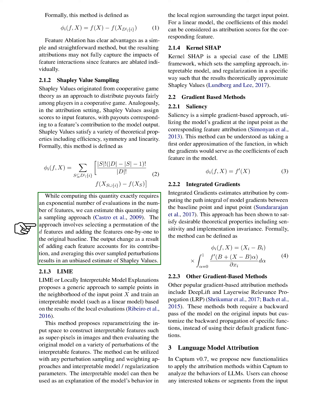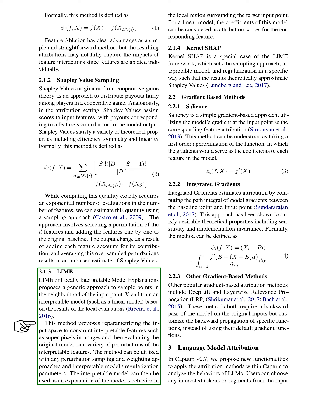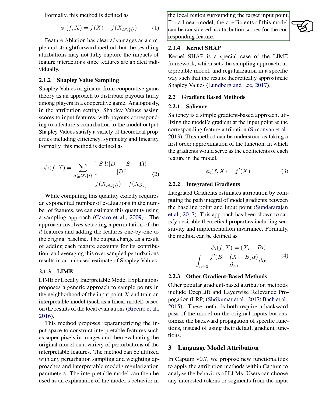Finally, there's LIME, or locally interpretable model explanations. This method suggests sampling points near the input point X and training an interpretable model, like a linear model, based on the results of local evaluations. It proposes redefining the input space to construct interpretable features and then evaluating the original model on a variety of perturbations of those features. The interpretable model can then explain the model's behavior in the local region surrounding the target input point, and for a linear model, the coefficients can be considered as attribution scores.